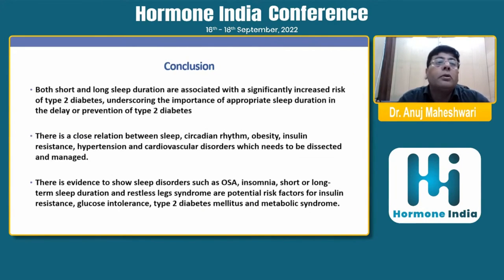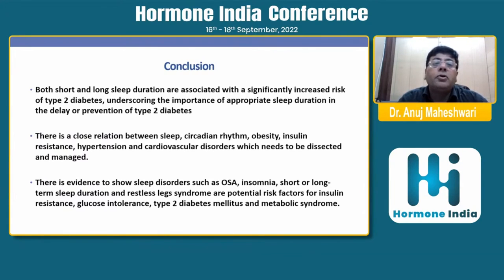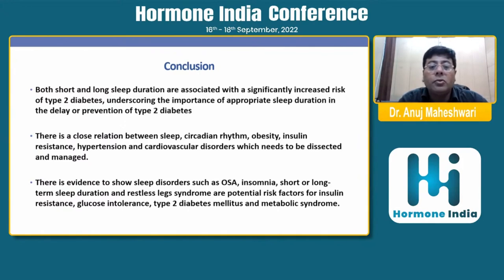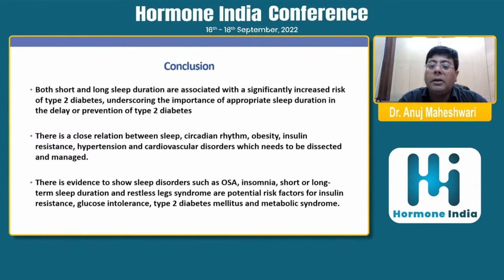In conclusion, both short and long sleep duration are associated with a significantly increased risk of type 2 diabetes, underscoring the importance of appropriate sleep duration in the delay or prevention of type 2 diabetes. There is a close relation between sleep, circadian rhythm, obesity, insulin resistance, hypertension, and cardiovascular disorders, which needs to be addressed. Evidence shows that sleep disorders such as obstructive sleep apnea, insomnia, short or long sleep duration, and restless leg syndrome are potential risk factors for insulin resistance, glucose intolerance, type 2 diabetes, and metabolic syndrome.